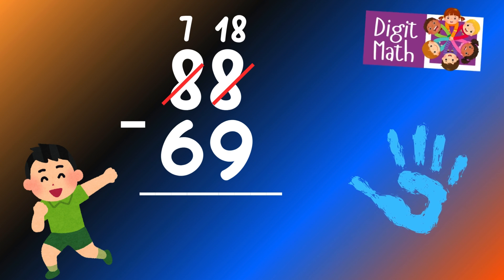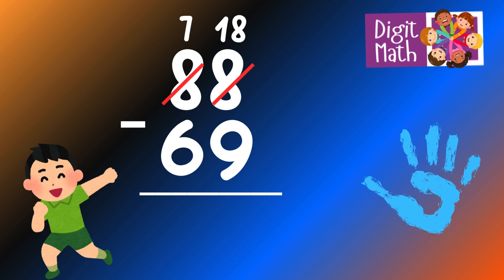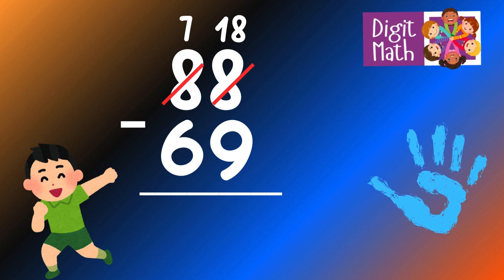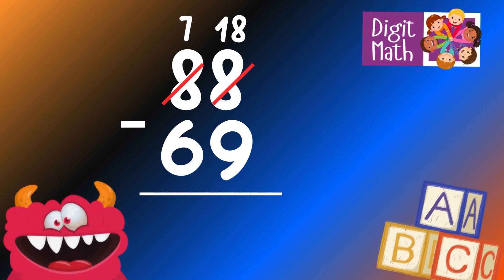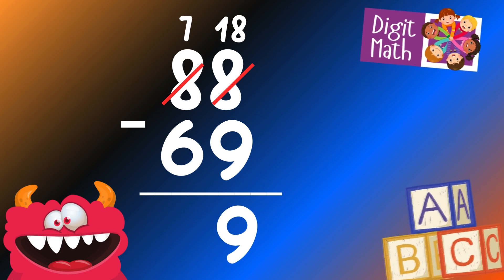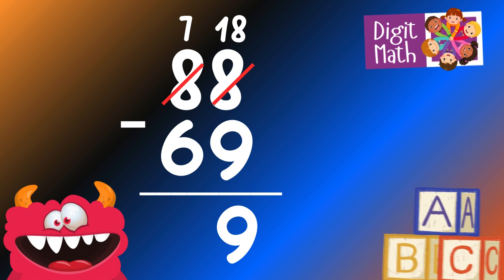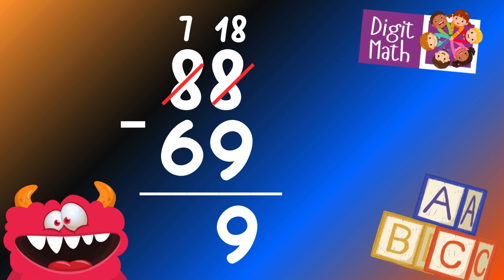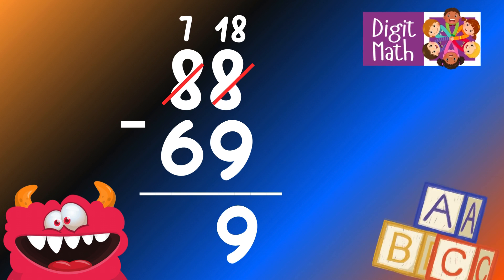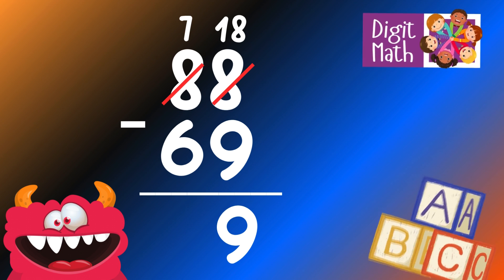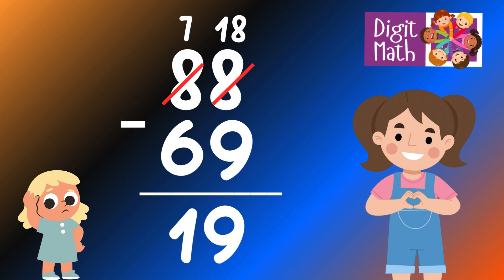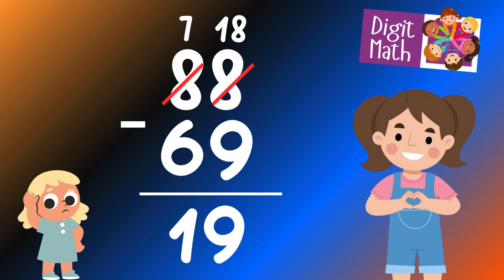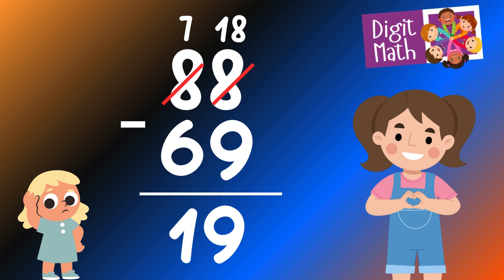Now we have 18 in the Units column. Subtract 9 from 18, which equals 9. In the Tens column, we now have 7. Subtract 6 from 7, which equals 1. So the final result is 88 minus 69 equals 19.